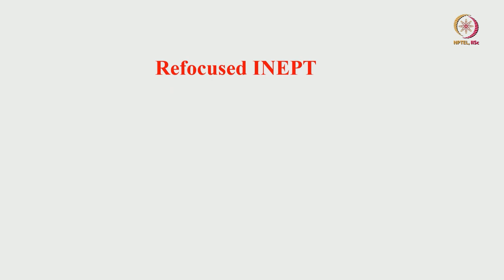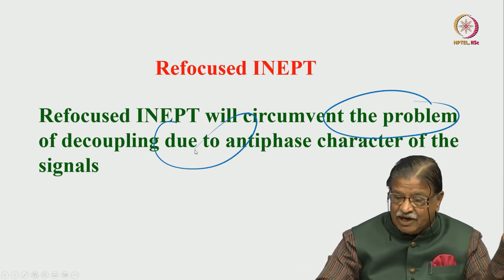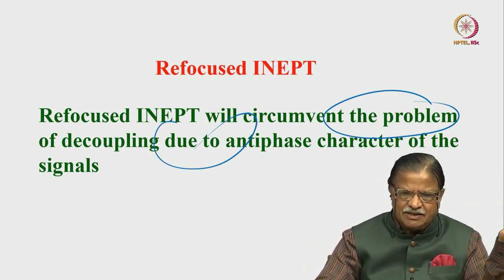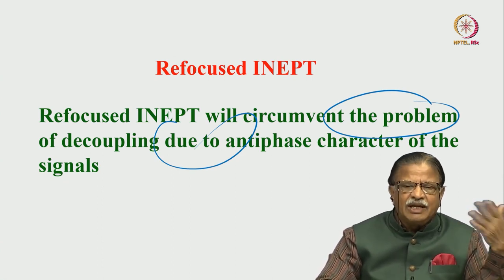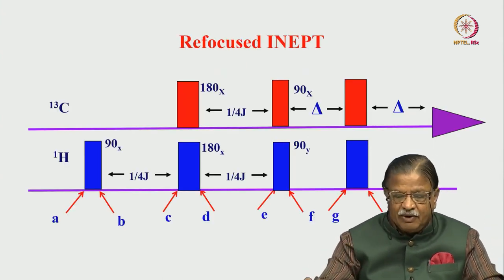So far we have not done the decoupling — we only suppressed the natural abundance carbon-13 signal. We can do what is called a refocused INEPT: the same INEPT experiment with a 180 pulse in the middle as a spinacos for refocusing chemical shift. We can extend further. The refocused INEPT will circumvent the problem of decoupling due to the antiphase character. All we have to do is give a delay after the last pulse.